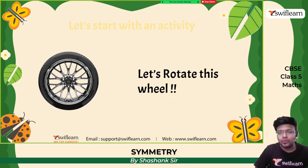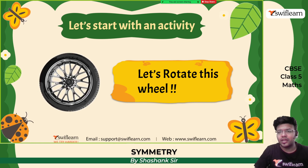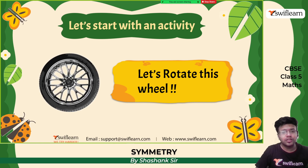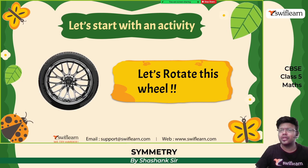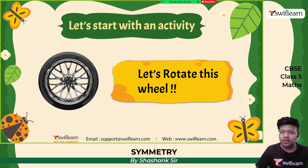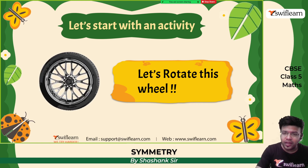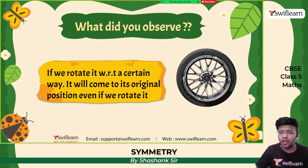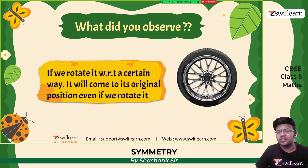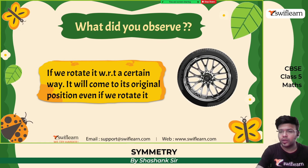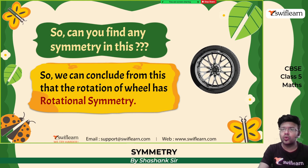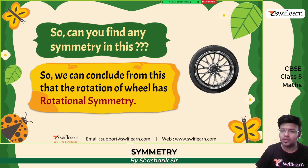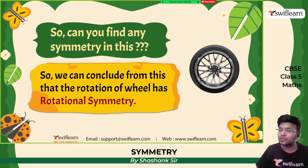Let's start with an activity. Let's take an example of this wheel. So let's rotate this wheel — at whatever angle you rotate it, at various angles it will look the same. If we rotate it with respect to a certain way, it will come to its original shape and position even if we rotate it. Can you find symmetry in this? Yes, the rotation of a wheel has rotational symmetry.